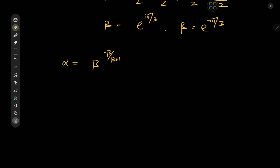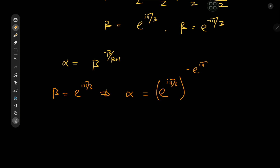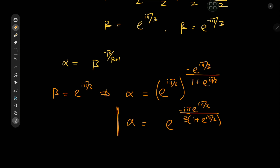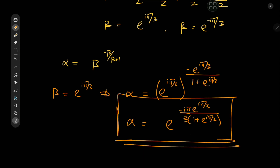For the two possible values of β, we have two corresponding cases for α. In case one, if β = e^(iπ/3), then α = e^(iπ/3) raised to −β, which is −e^(iπ/3), divided by 1 + e^(iπ/3). Multiplying the exponents gives α = e^(−iπ·e^(iπ/3)/3) divided by (1 + e^(iπ/3)), which looks extremely cool.